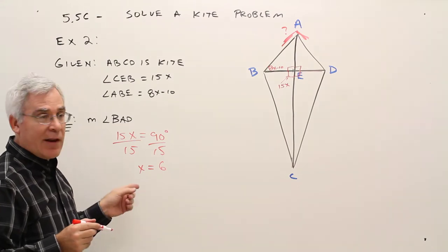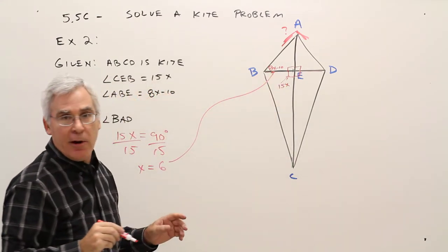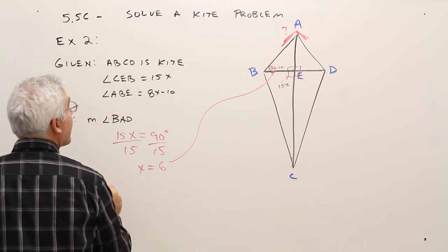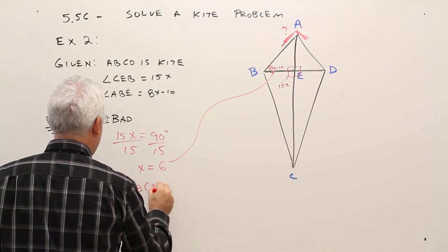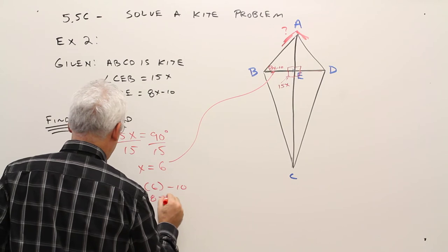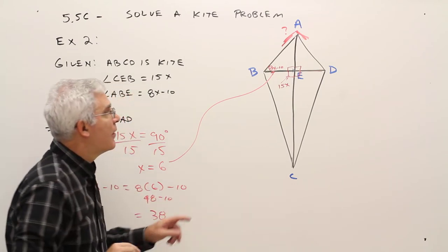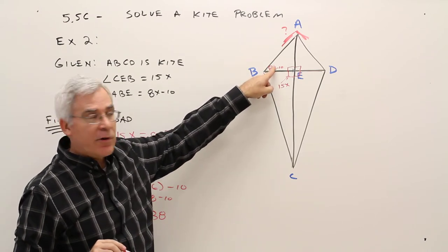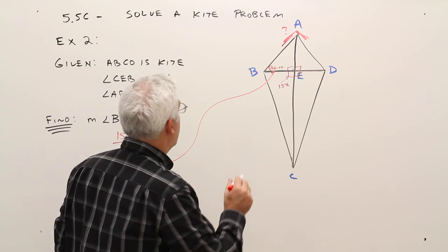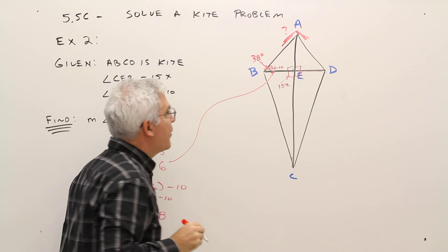Okay, so once I get x to equal 6, then just put it right into there and get that angle there. So 8x minus 10 equals 8 times 6 minus 10. 48 minus 10. So equals 38. So that measure there is 38 degrees. So I'll just kind of write it in there. So that's 38 degrees.